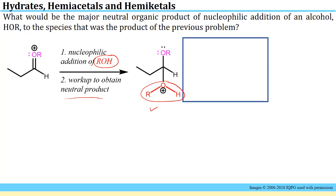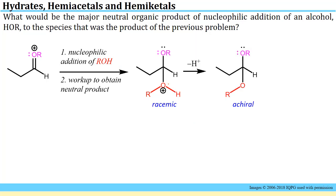Then our second step, some type of workup to provide a neutral species. We would simply have to take off the H from this positively charged oxygen. We could do that by having some of the alcohol in the solution pull off the proton like that.